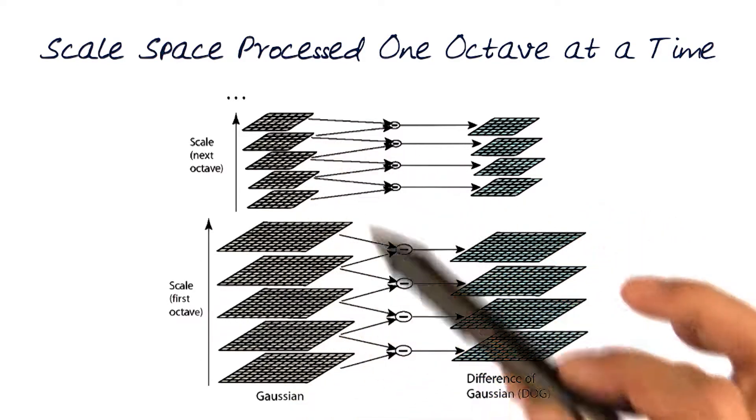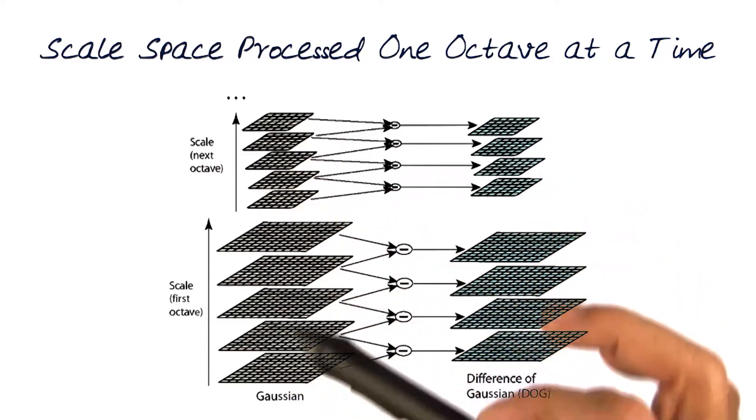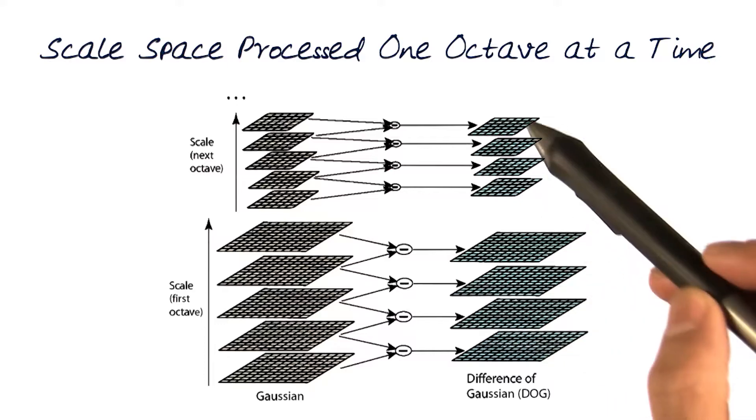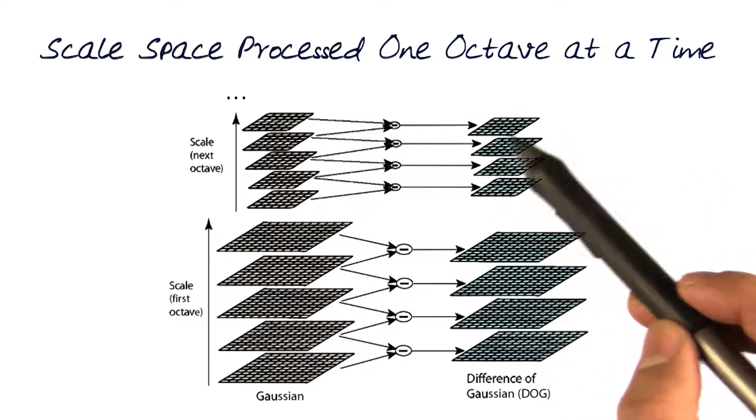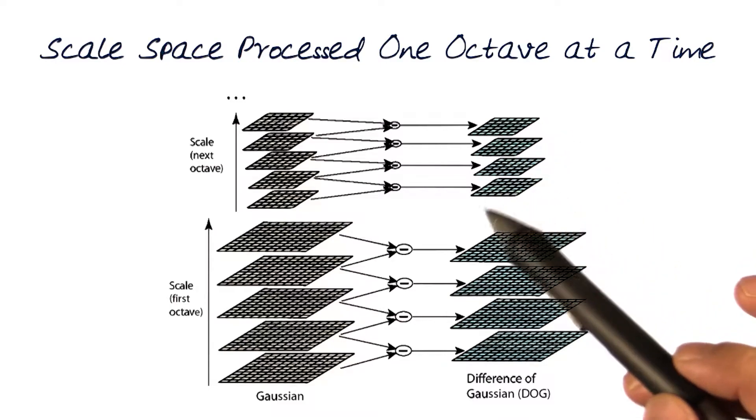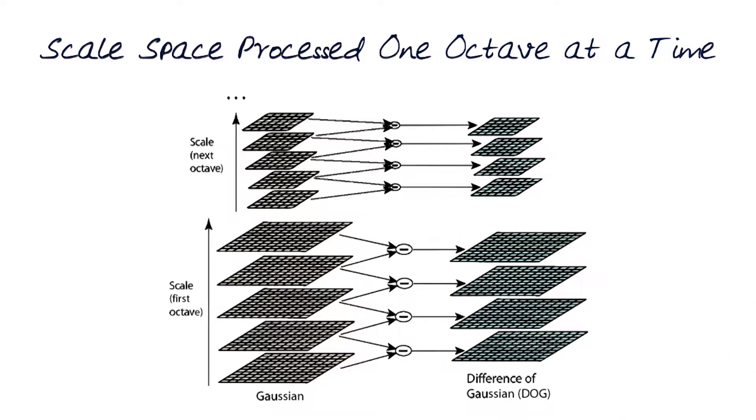Now we can start doing all of the processing. What comes out at the different scales are these Gaussians, and using these Gaussians, we can start looking at differences of Gaussians. This is a very similar concept to what we'd done when we did blending using the frequency domain.